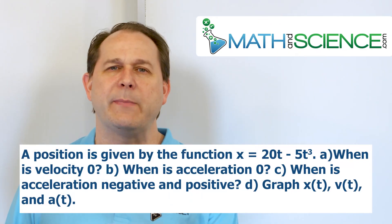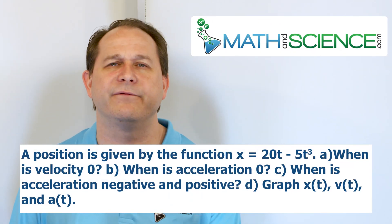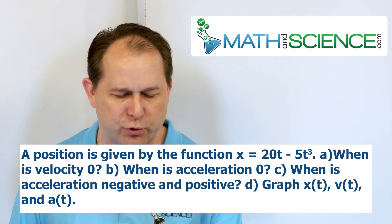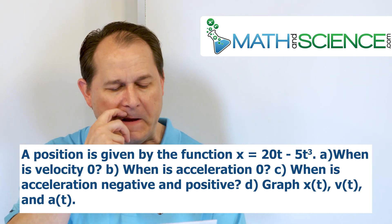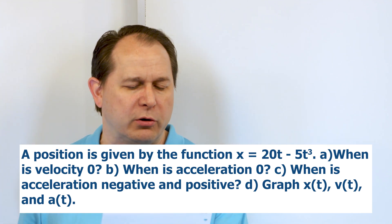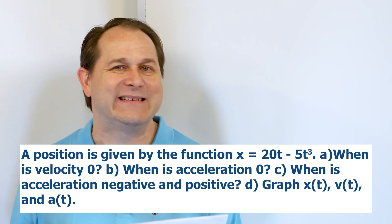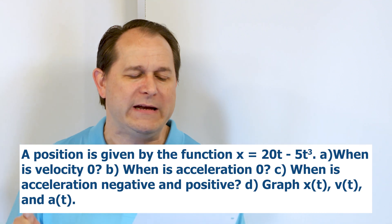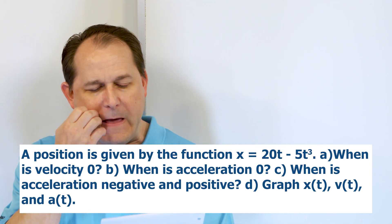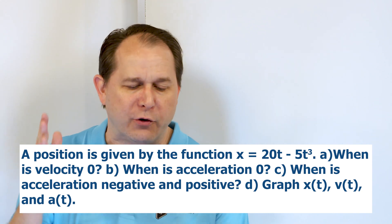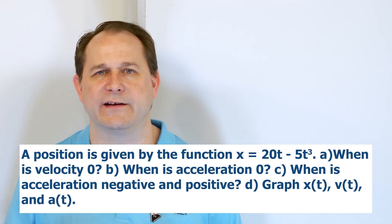A particle's position is given by the function x = 20t - 5t³, where x is in meters and t is in seconds. Part A: when is the particle's velocity zero? Part B: when is the acceleration zero? Part C: when is the acceleration negative or positive? And Part D: graph the position, velocity, and acceleration.